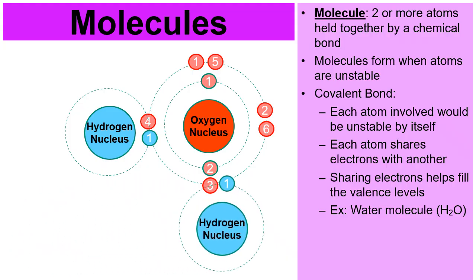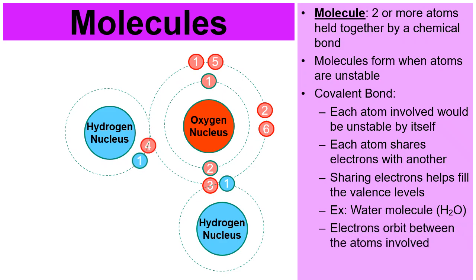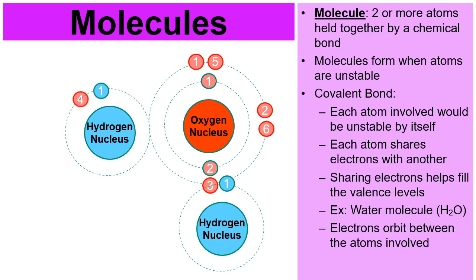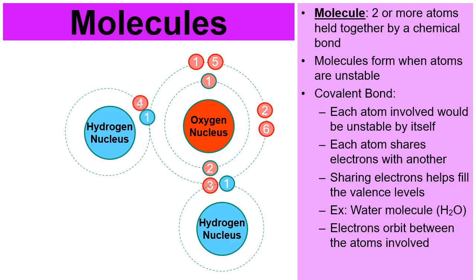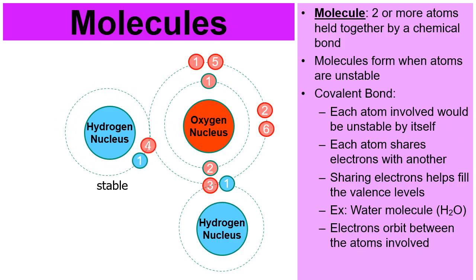How this works is that the electrons simply overlap — the levels simply overlap. Look at the hydrogen on the left. What we see is that the electrons are orbiting between the two. Hydrogen has its own blue electron, and then it's borrowing one in red. The hydrogen on the left is stable.